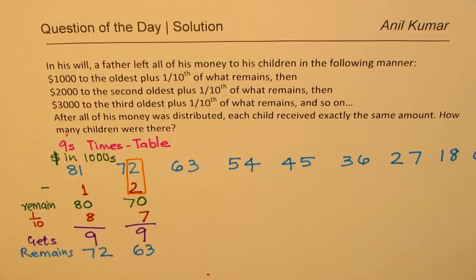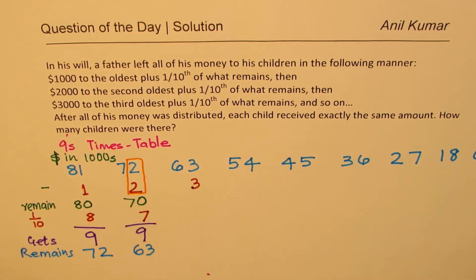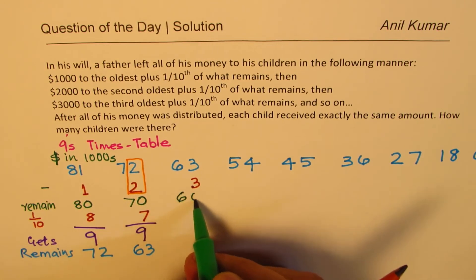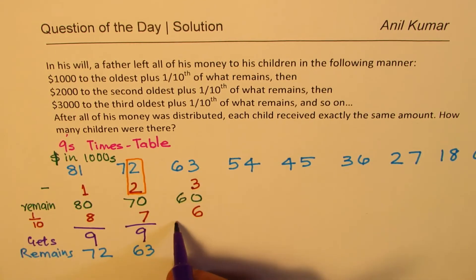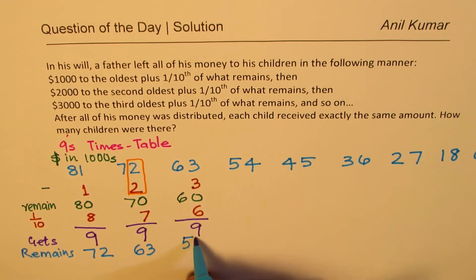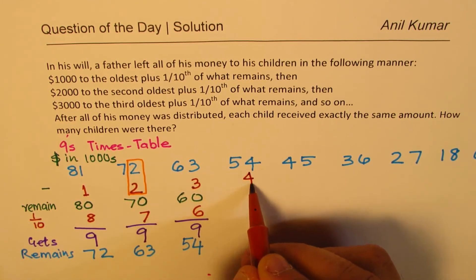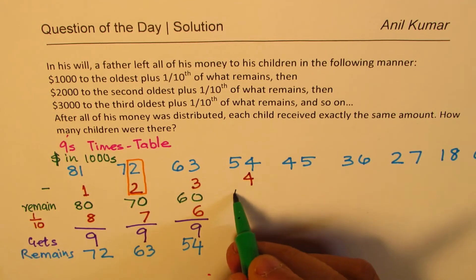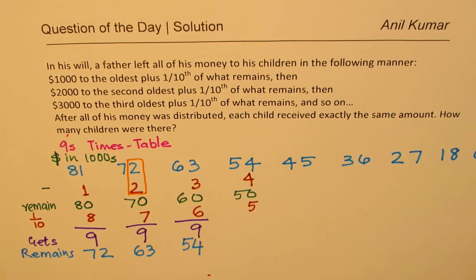The third person begins with $63,000. They get $3,000, so when you take away $3,000, you get $60,000 left. 10% of 60 is 6, and the total is $9,000 again. Take away 9 from 63 and you get 54. So you take away 4 and what remains is 50, then one-tenth of that. What remains after that is $45,000.